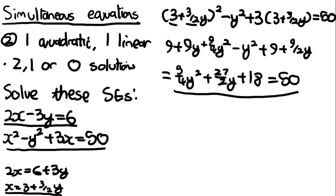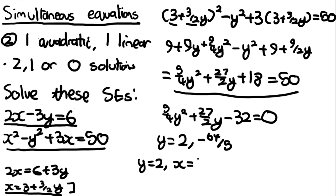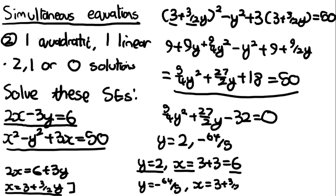Bringing 50 to the other side: (5/4)y² + (27/2)y − 32 = 0. Putting this into the calculator gives y = 2 and y = −64/5. When y = 2: x = 3 + (3/2)(2) = 3 + 3 = 6. When y = −64/5: x = 3 + (3/2)(−64/5) = −81/5.